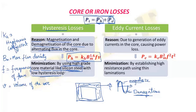The hysteresis loop is a loop between BH — also called the BH curve — representing magnetic flux density versus magnetic field intensity. Any material which has a smaller or lower hysteresis loop is a good material to make the core.